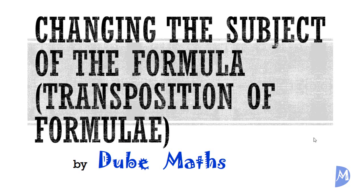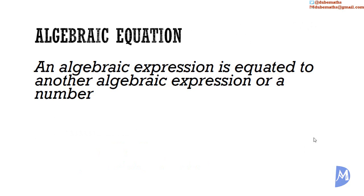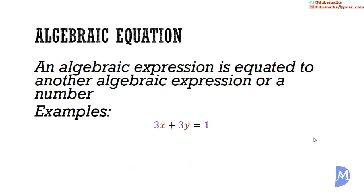Changing the subject of the formula, or transposition of formula A. Algebraic equations: the equating of two algebraic expressions forms an equation. The equal sign is used to denote equality. Some examples are: 3x plus 3y is equal to 1, and a is equal to s squared.